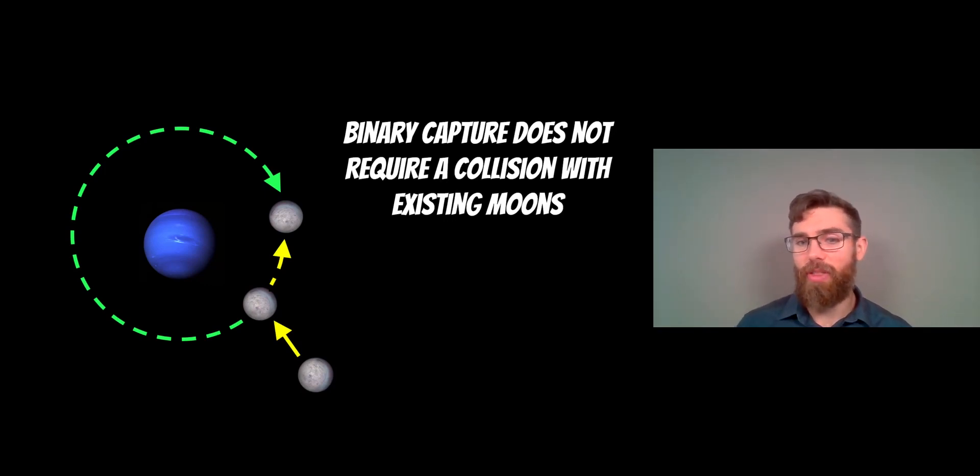Whereas a binary capture doesn't need that. It's more likely. It's more gentle. So it's one of the reasons why we think that Triton is a binary or double dwarf planet that has been captured. It's the more likely scenario, given that binaries are common. It's a gentle process. So we think it was originally this double dwarf planet. And I wonder where its second component is now. Where was that second part of that double dwarf planet?